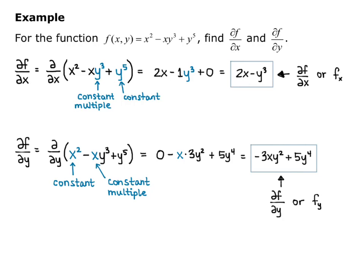So that's how we do our partial derivatives: treat the other variables as if they're constants and take your derivative. That finds the rate of change in the x direction or the y direction.